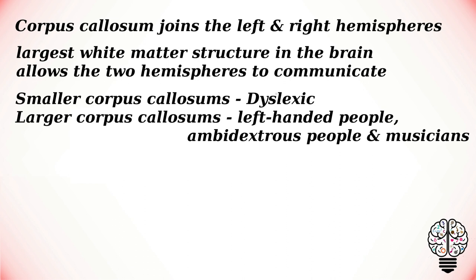Stuttering is sometimes associated with an underactive Broca's area. The corpus callosum is a broad band of nerve fibers that joins the left and right hemispheres. It is the largest white matter structure in the brain and allows the two hemispheres to communicate.